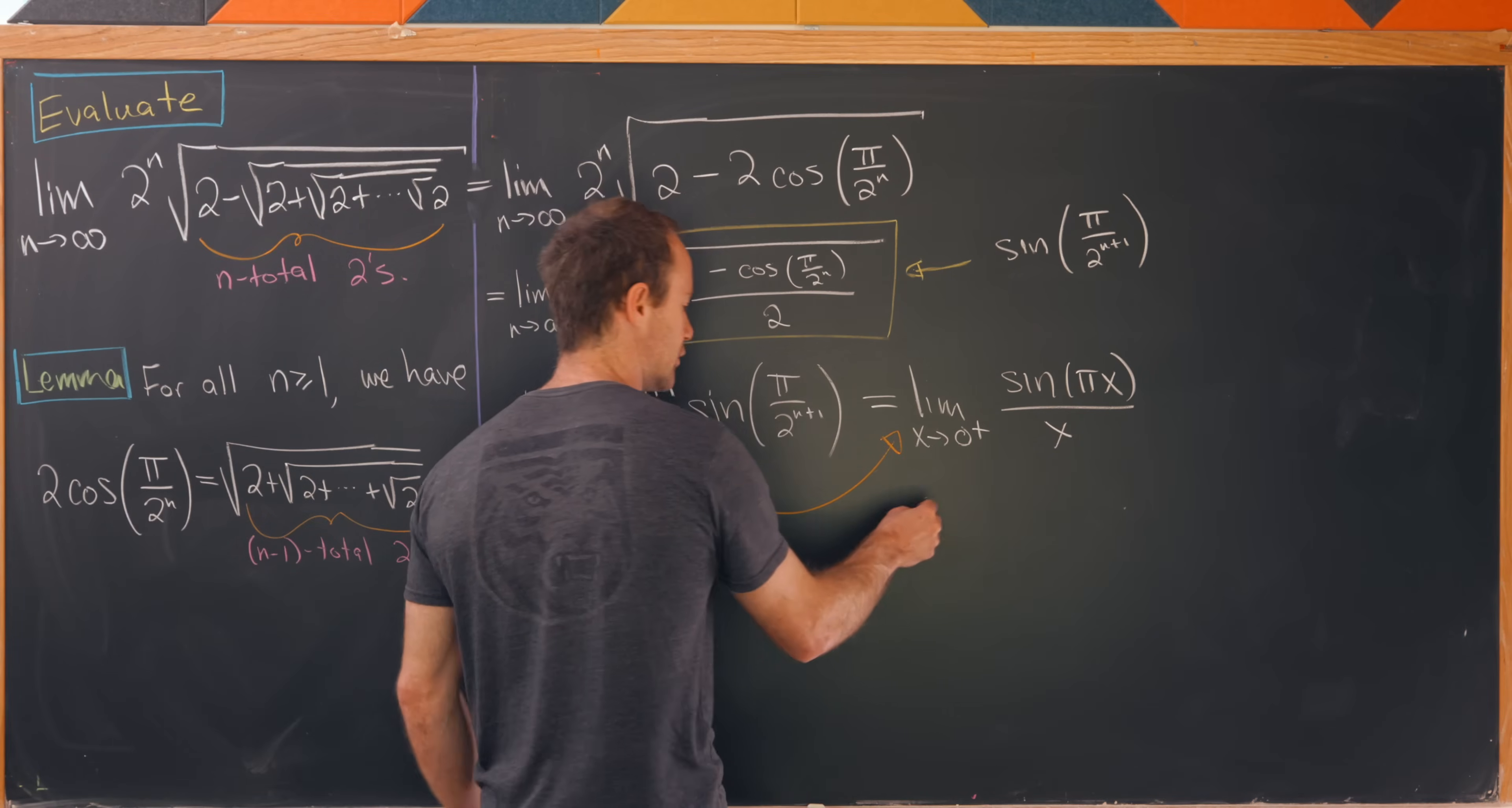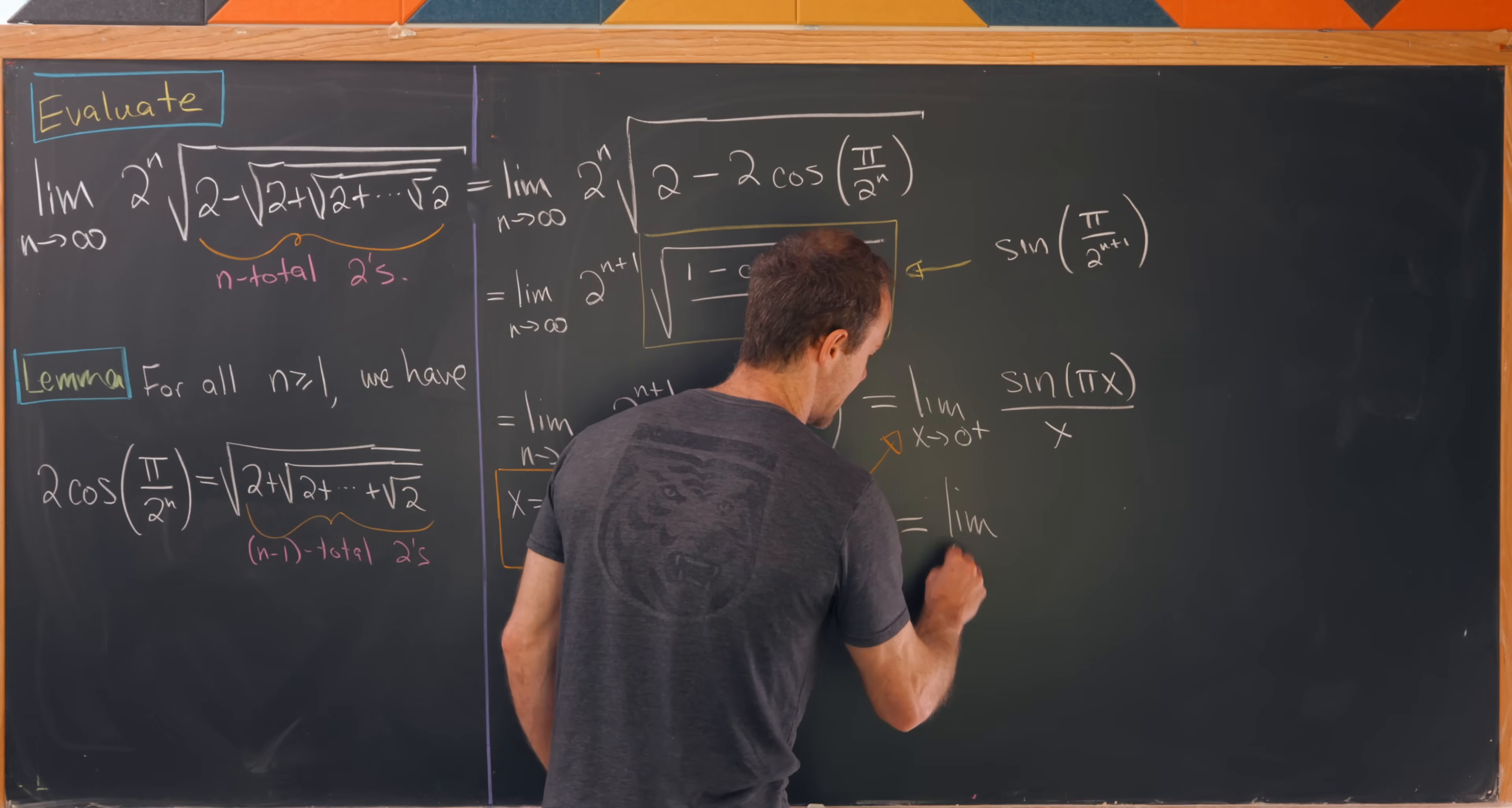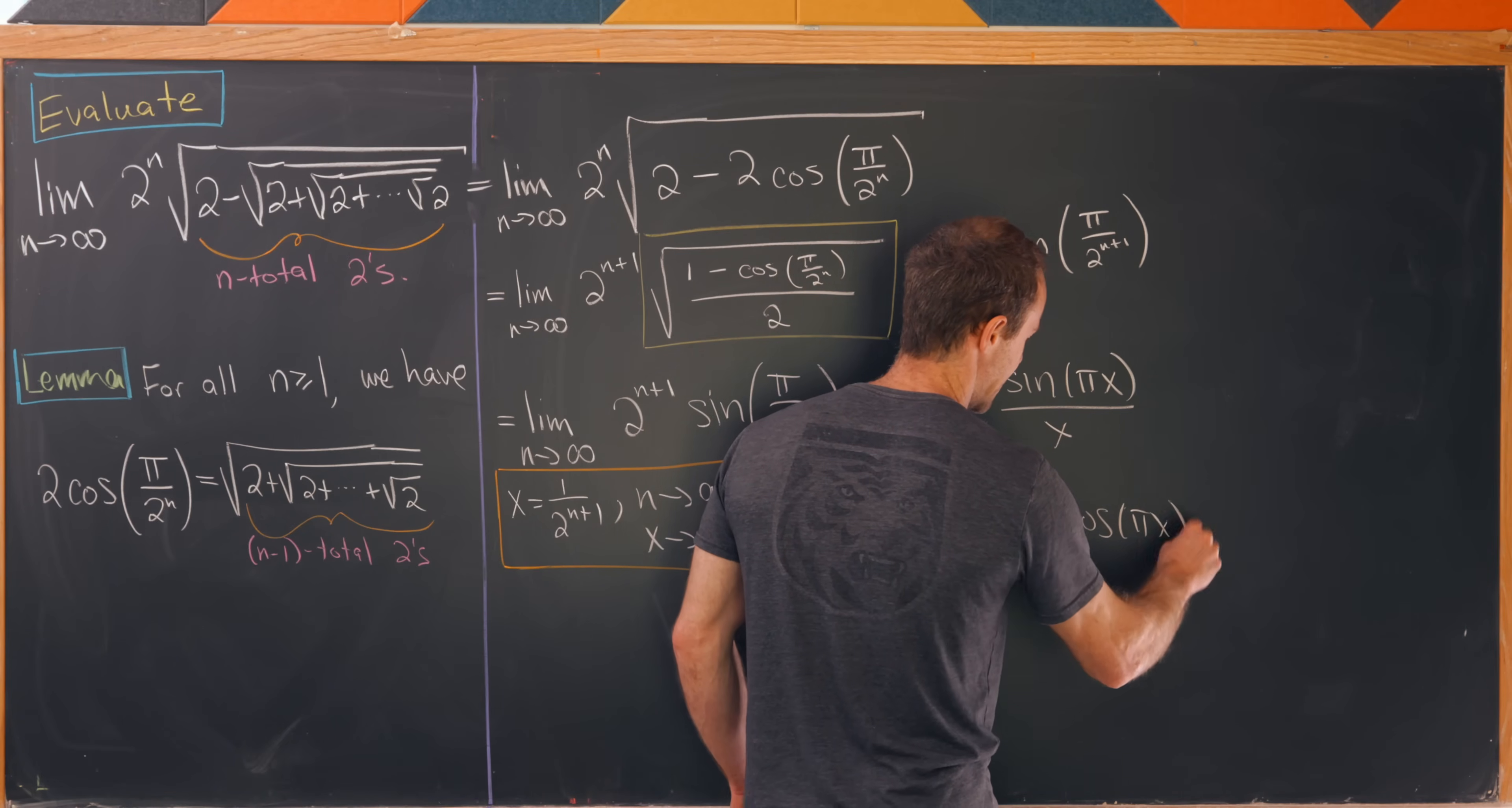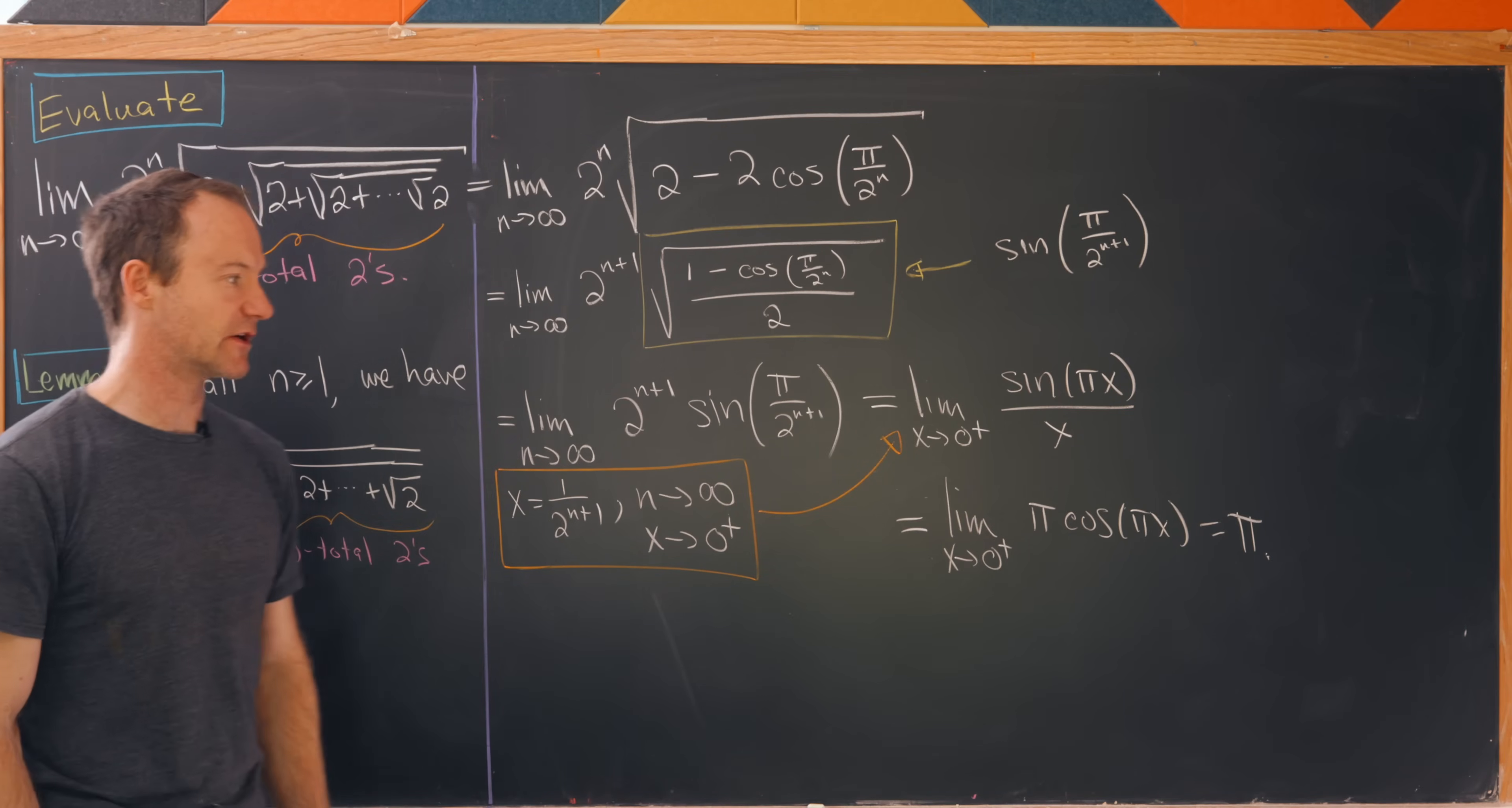We can get there also by L'Hopital's rule if we wanted to. So applying L'Hopital's rule to this gives us the limit as x goes to 0 from above of pi times the cosine pi x equals pi. So that means the final value for our limit here is pi.